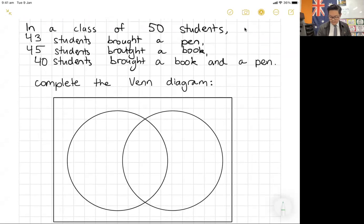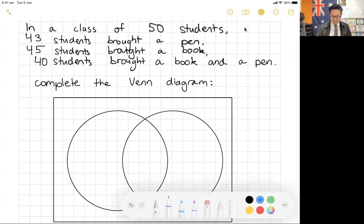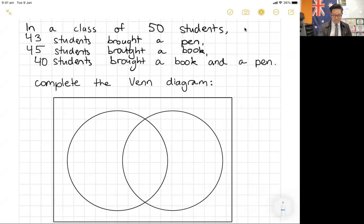The first thing that I want to do is actually label these circles. It's either someone brings a pen or someone brings a book, so I'm going to label the first circle P for pen and the other circle B for book.